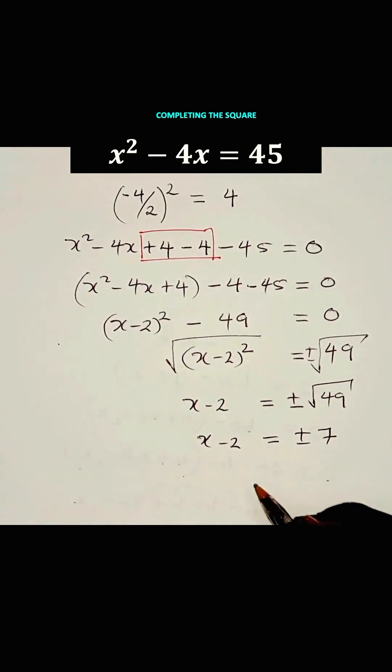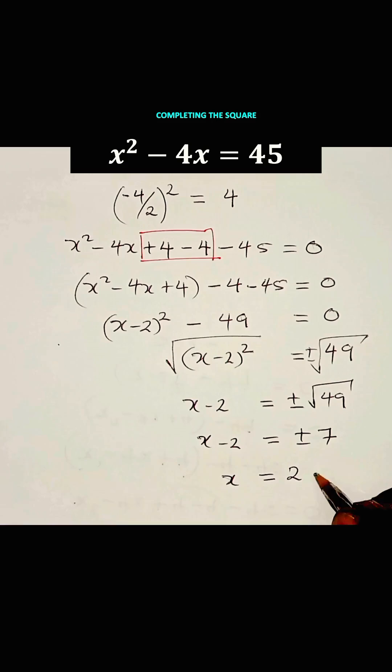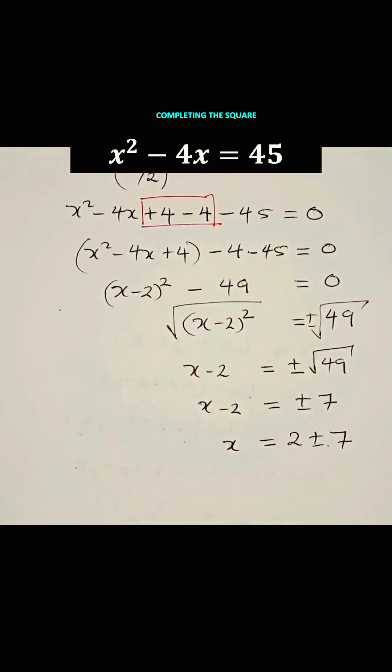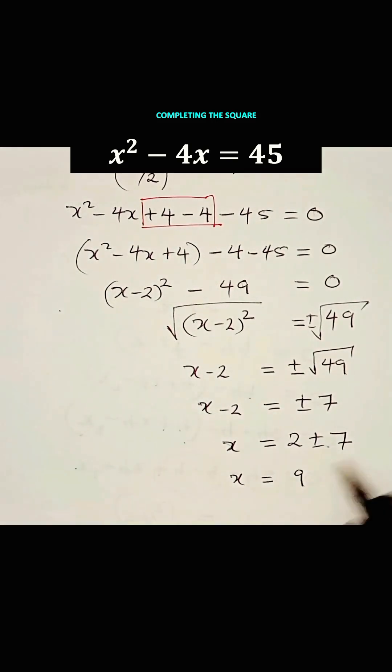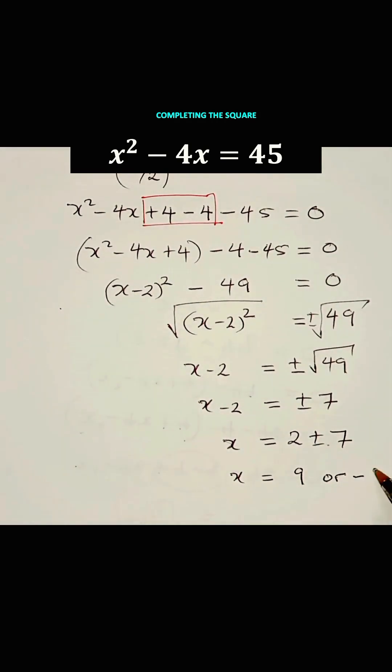We take this minus 2 to the right-hand side. We have X is equal to 2 plus or minus 7. And we get X is equal to 9. 2 plus 7, that's 9. Or, 2 minus 7, you get minus 5.